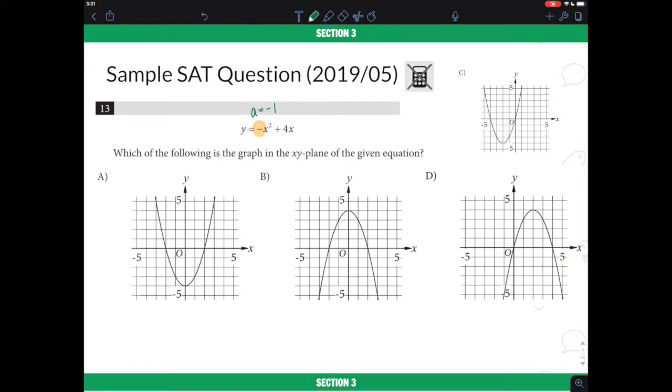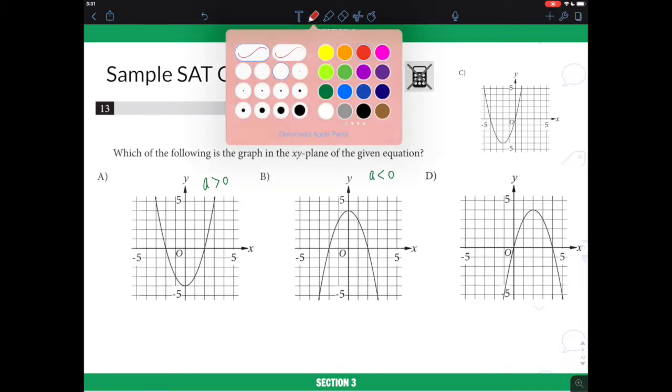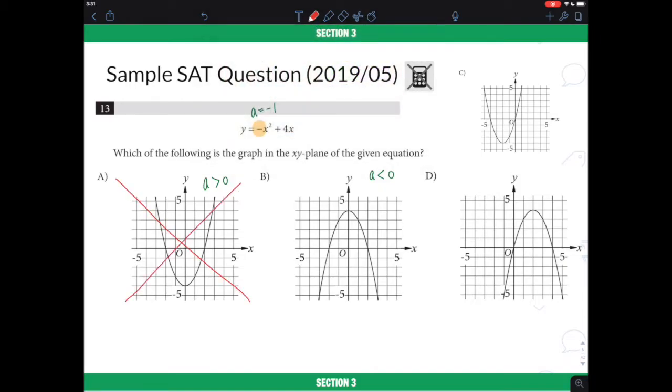If you look at choice A, that will be an example of opening up. And this would be the case when a is greater than zero, when a is positive. And opening down would be like choice B, when a is less than zero, a being negative. And since we can identify the a value right away, then we can immediately cross out the options that are opening up.